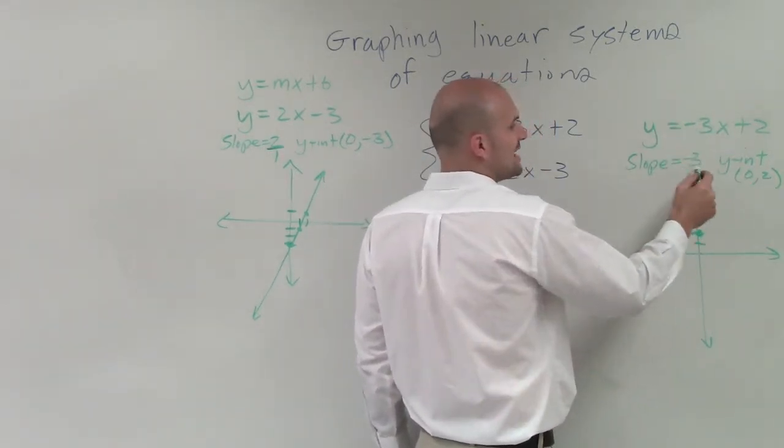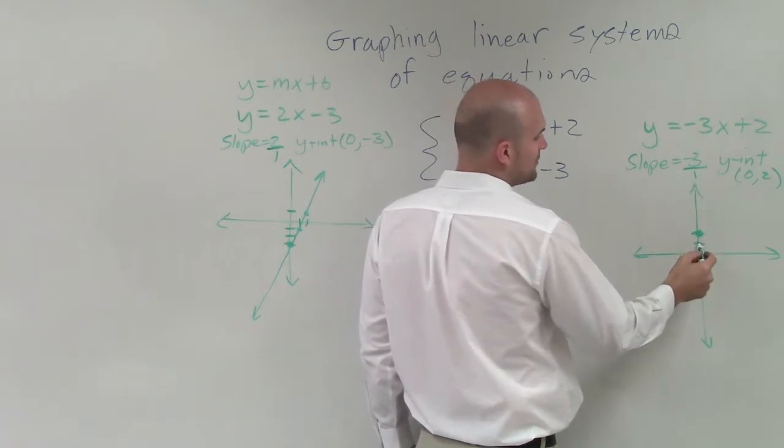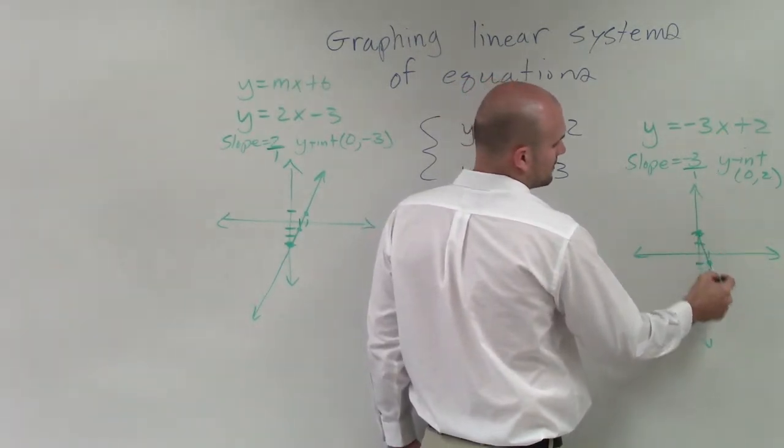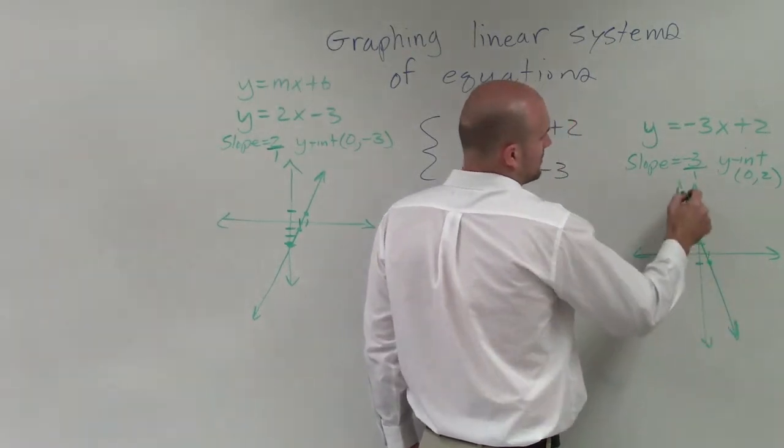Now, my slope here is negative 3 over 1. So I go down 3, 1, 2, 3, over 1. OK?